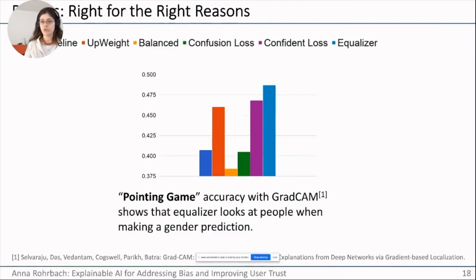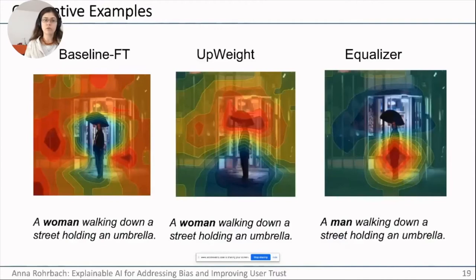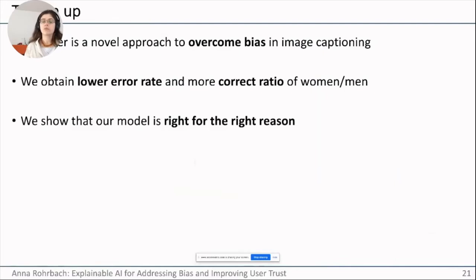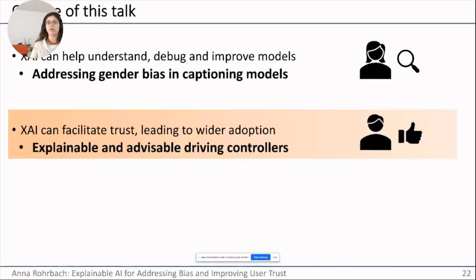Finally, we wanted our model to be right for the right reasons. We use visual explanations to reveal where the model is looking as it generates words, and evaluate whether it attends to the person or not. Across several different explanation techniques, we consistently find that our full Equalizer model most frequently attends to people. For example, the attention shifts from the kitchen context to the man in the scene. To summarize: Equalizer overcomes bias in image captioning, achieves a lower error rate, a more correct ratio of men to women, and is right for the right reasons.